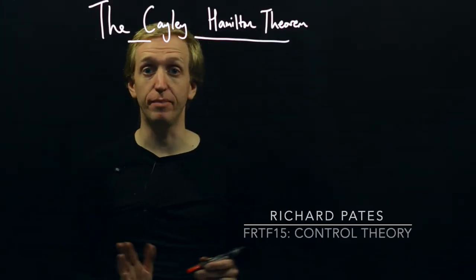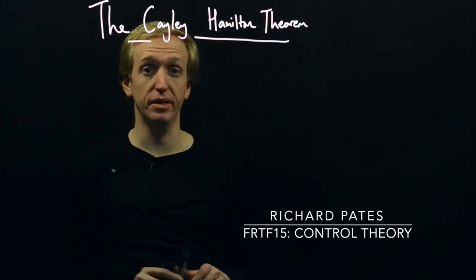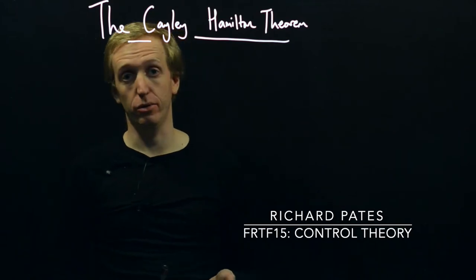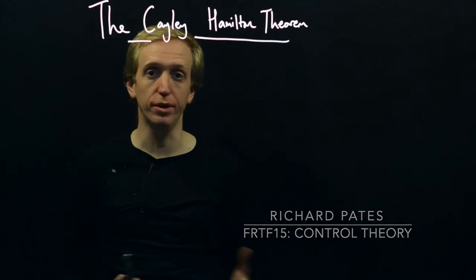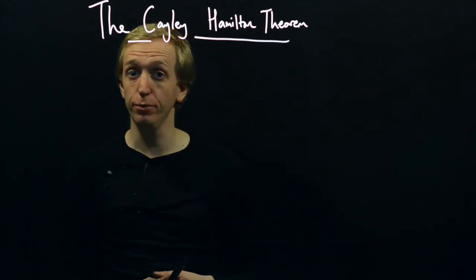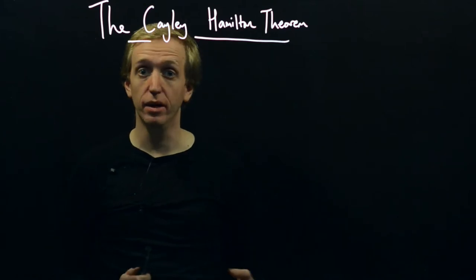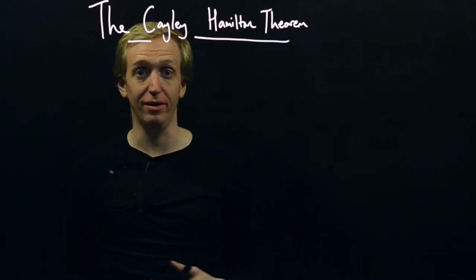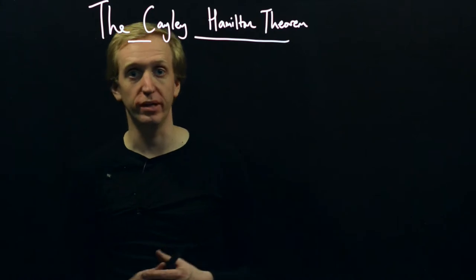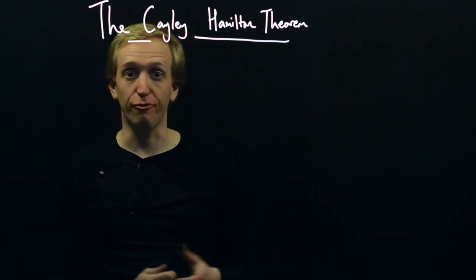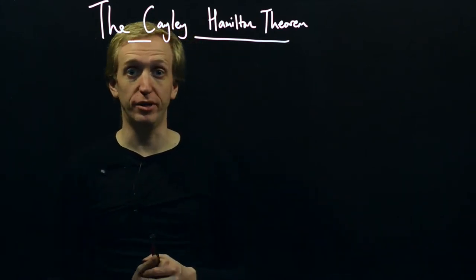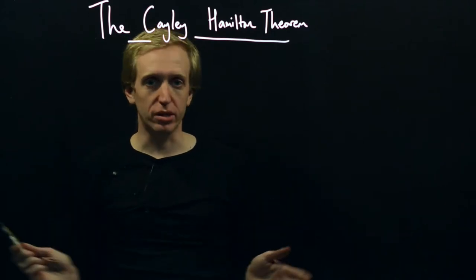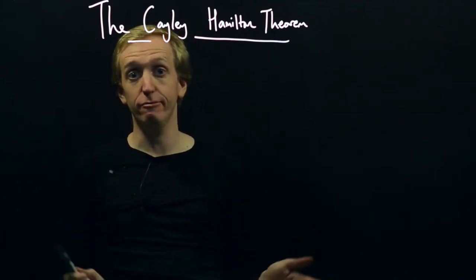We're now going to do a kind of sketchy proof of the Cayley-Hamilton theorem. If you go away and look online, the most common proofs that you'll see involve the Jordan normal form, which we talked about a little bit when we were talking about doing partial fraction expansions with state space. I'm going to give you a slightly different proof here.